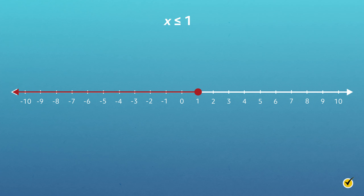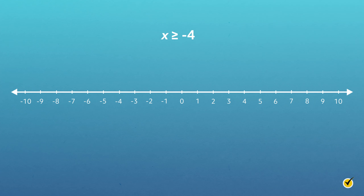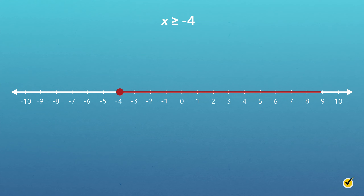Now it's your turn. Graph the solution set for the inequality x is greater than or equal to negative 4. Pause the video here, draw a number line, and try this one yourself. When you're finished, resume the video and we'll go over the graph together. The circle above negative 4 is closed to indicate that negative 4 is part of the solution set. Since x is greater than or equal to negative 4, the line extends to the right showing all possible solutions for x. Nice work!